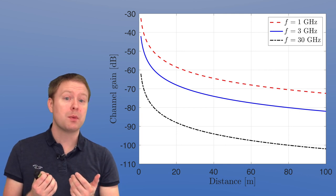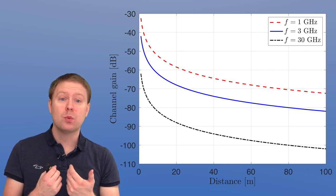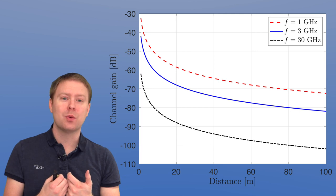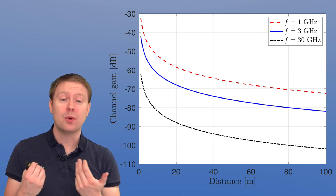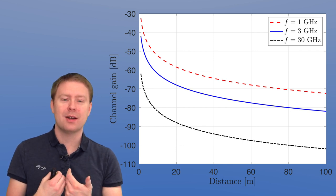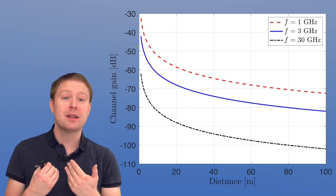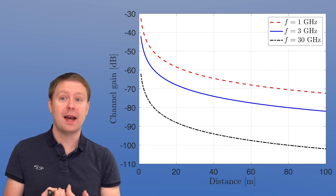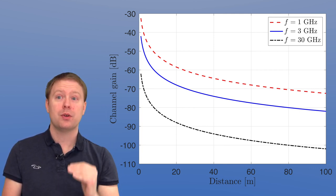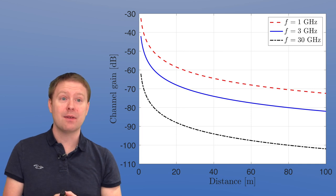This is all assuming what we call free space propagation where there's nothing at all in the world that is blocking the signals, for example. In reality you might have walls that are blocking and you need to penetrate with your waves, and then you might lose 10 or 20 dB just for that. So that's also pulling down the channel gain even further.